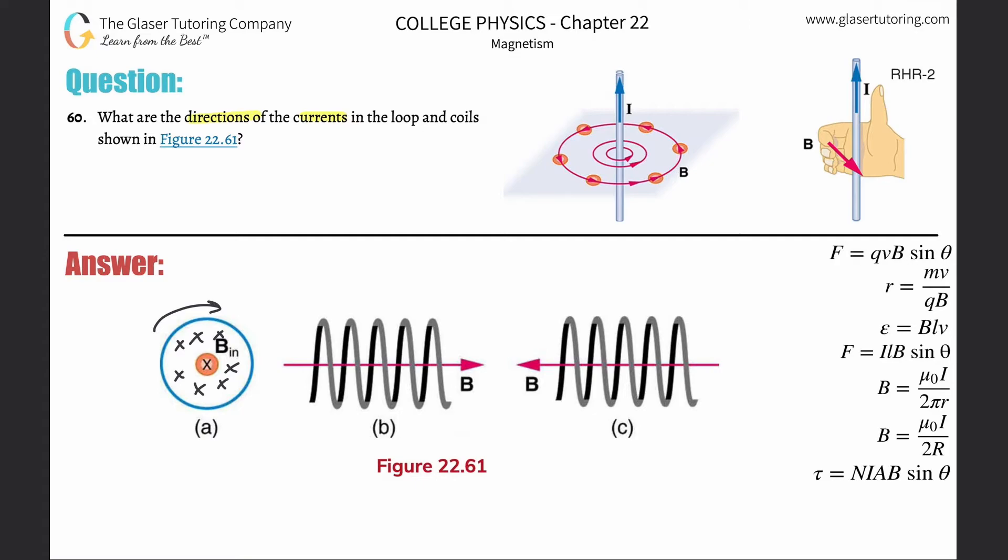The only way for the magnetic field to be traveling through the loop here using right-hand rule number two is if the current here is pointing downward. If the current's pointing downward, your thumb should be pointing down, and then as you rotate your fingers around, it should rotate around and into the loop. So I know then if the current's pointing down there, it must be pointing up in the back.